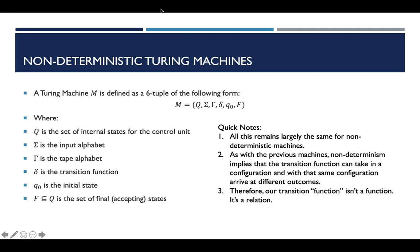As we talked about previously with different types of machines, what non-determinism does essentially is say that you can have one configuration — one set of current state in the control unit, one current alphabet symbol you're reading off of the input tape — and based on that current state, you can go to multiple new states. Going back to the idea of turnstile notation, we can actually take one intermediate representation of the Turing machine and go to multiple different instantaneous configurations given the same input. So going back to the second lecture in the class, we know that this is not necessarily a function — the transition function itself, delta, is actually a relation.